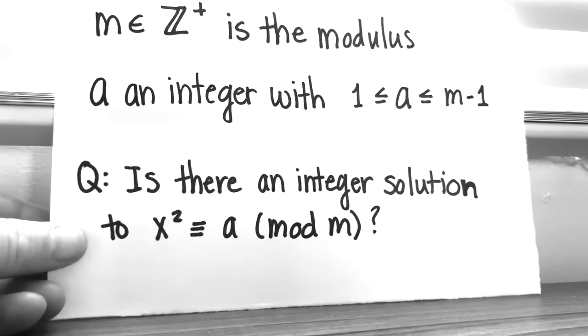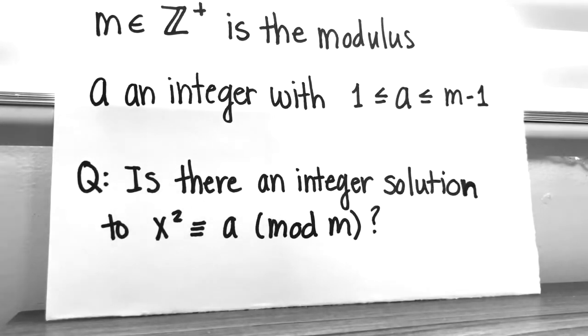Start with our setup, as has been in the previous videos as well. Our modulus is a positive integer. You can never have a modulus that isn't. The difference here is that we're going to have a be an integer with a restricted to being between 1 and m minus 1.